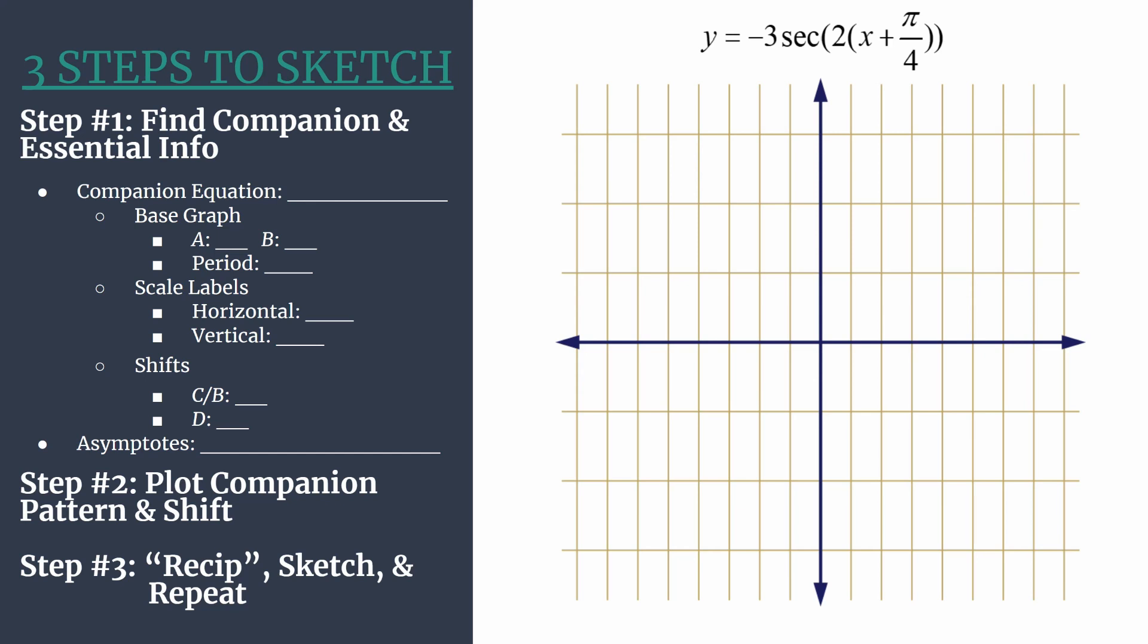Two quick notes before we get started. First, recall that our general form for a secant equation is y equals a secant bx minus c plus d. As we noted before, our equation has actually the b term factored out of that bx minus c parentheses set. So we really need to take that into account. There's a benefit of that because you can actually see more easily the phase or horizontal shift. We can look directly in the inner parentheses and see that our shift, our phase shift, should be left pi over 4. But if you're used to working with it in the general form, I do recommend that you just quickly distribute that 2 and rewrite the equation to negative 3 secant of 2x.